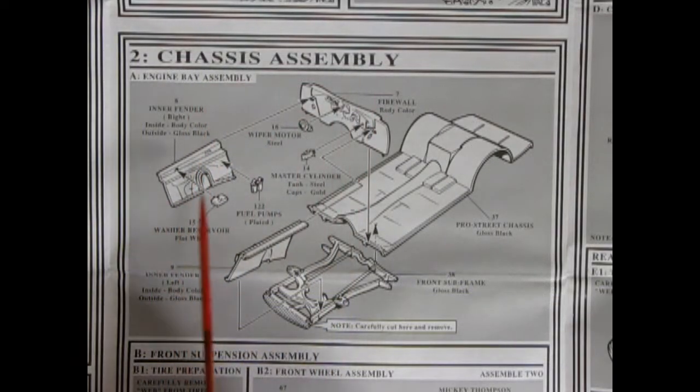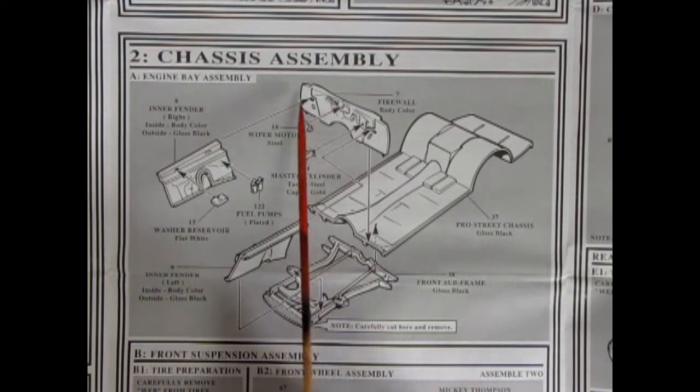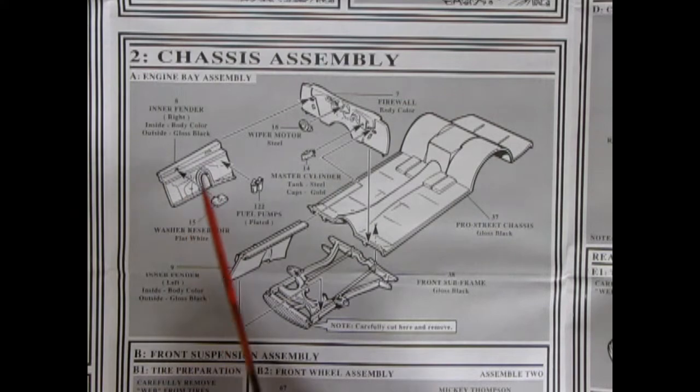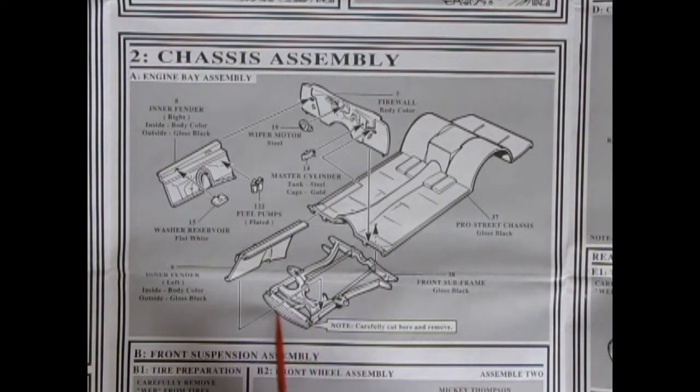And here's your chassis assembly coming up next. The engine bay assembly. So right here we got our firewall. Our windshield wiper motor. Master cylinder going on. Dual fuel pumps. Gluing onto the inner fender here. And then our washer reservoir going up top. And then the second inner fender. It says here to carefully remove this curved area and cut straight across for your front subframe to glue onto your pro street chassis. Right on.